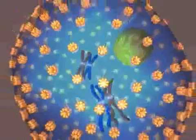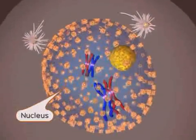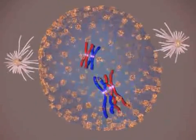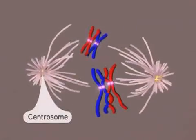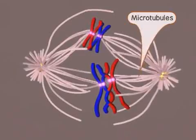There are several more key steps in prophase I. The nuclear membrane begins to break down. Then, the two centrosomes migrate to opposite ends of the cell and microtubules appear. The microtubules then attach to the chromosomes.